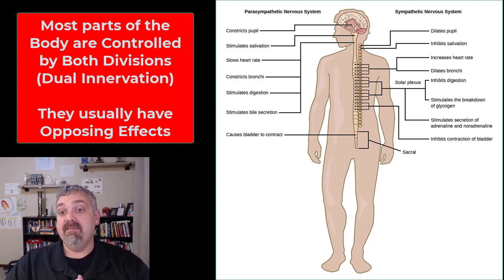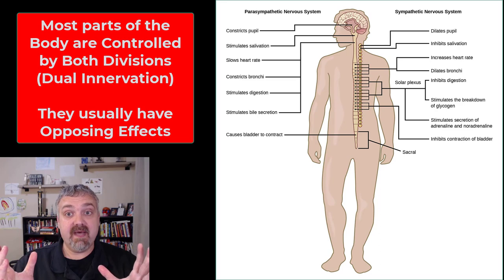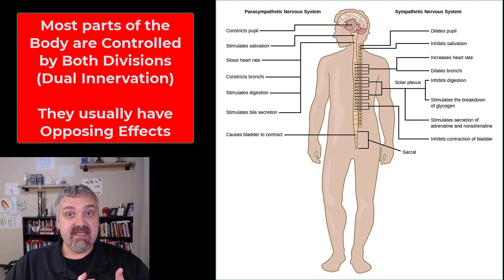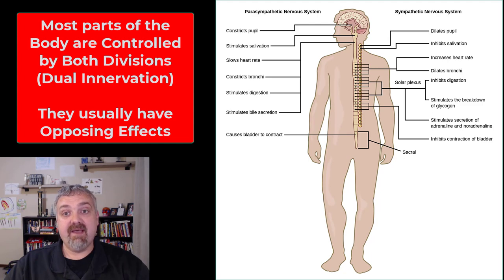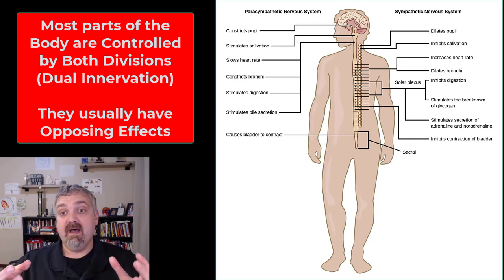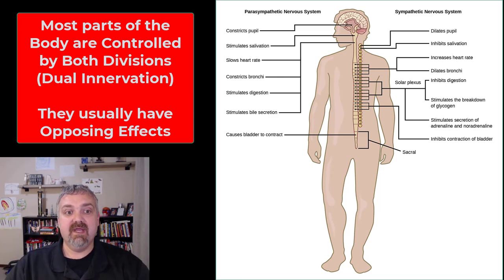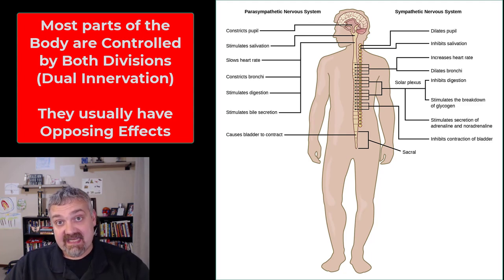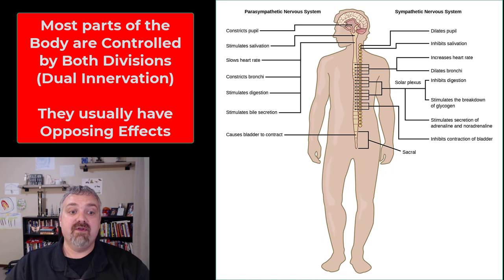But that's not always the case — the two systems can work independently. Some parts of the body are only under control of the sympathetic nervous system; your blood vessels are the key example. And there's one part of your body only under control of the parasympathetic nervous system: your lacrimal glands. The two systems can also work together on complex processes. The best textbook example is that achieving an erection is a parasympathetic response, whereas ejaculation is a sympathetic response, so reproduction requires both halves of the autonomic nervous system.